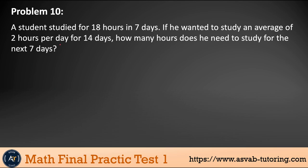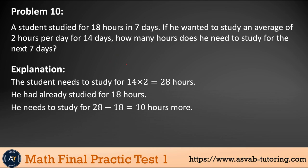Next problem: A student studied for 18 hours in seven days. If he wanted to study an average of two hours per day for 14 days, how many hours does he need to study for the next seven days? He studied two hours per 14 days. If you multiply two hours times 14, that gives you 28 hours. He needs to study 28 hours, but he already did 18 hours. If you subtract 18 hours from 28 hours, that is 10 hours. He has to go more in order to make the average two hours per day for 14 days.